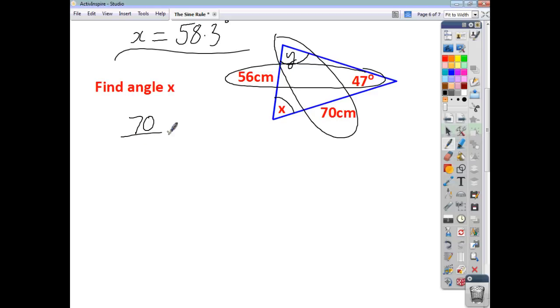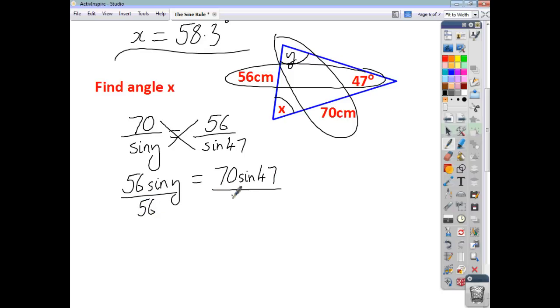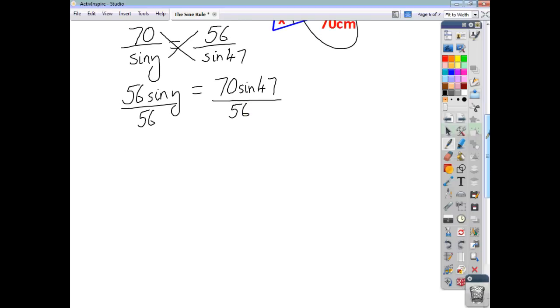So we'll start off by saying 70 over sine y is equal to 56 over sine 47. Get everything onto one level. So you end up with 56 sine y equals 70 sine 47. Divide both sides by 56. That then gives us sine y on its own. So sine y is going to be 70 sine 47 over 56. We can do inverse sine of this to give us y. So y is going to be 66.1 degrees.